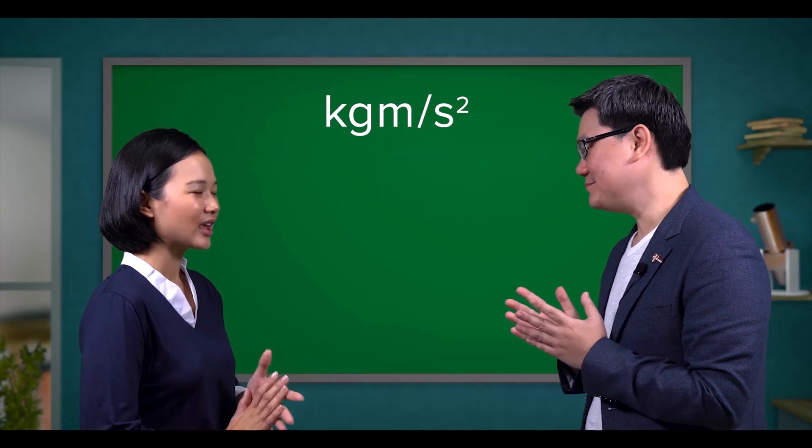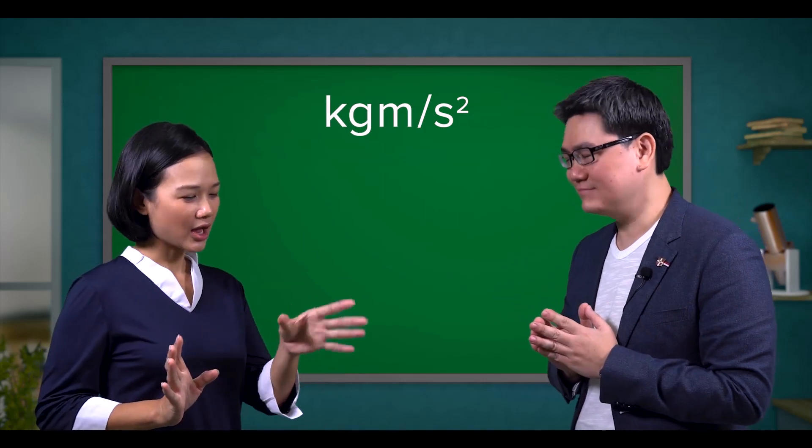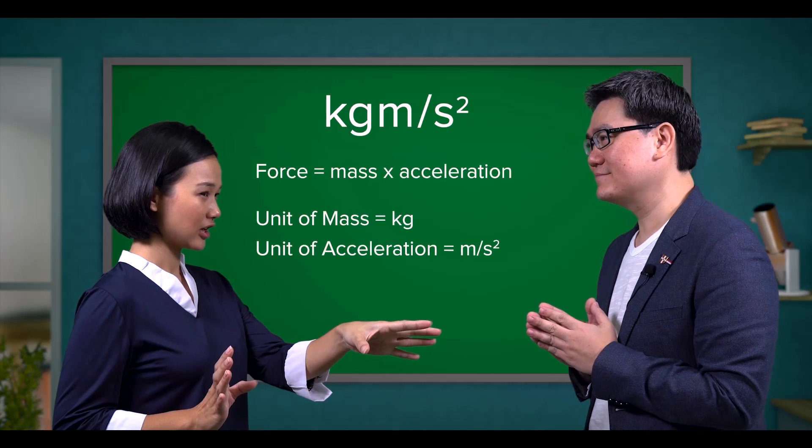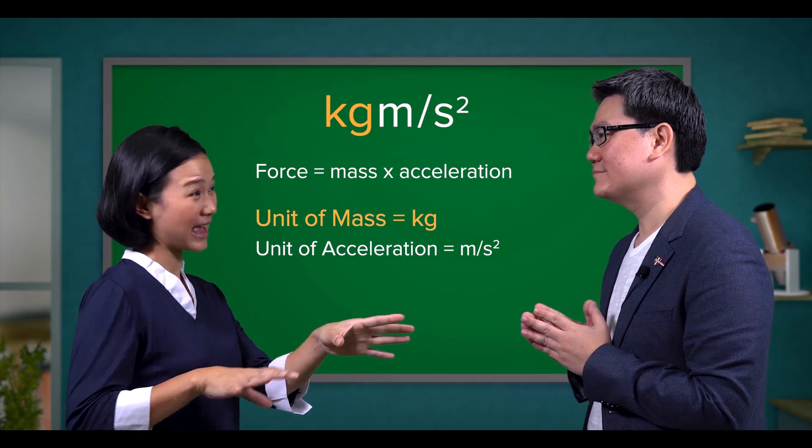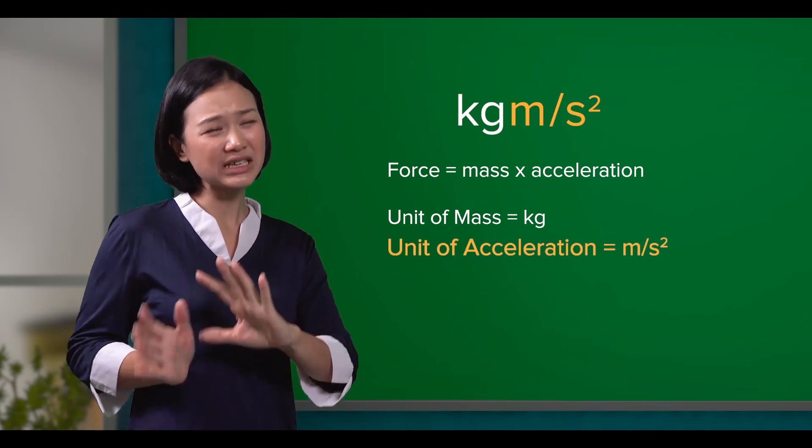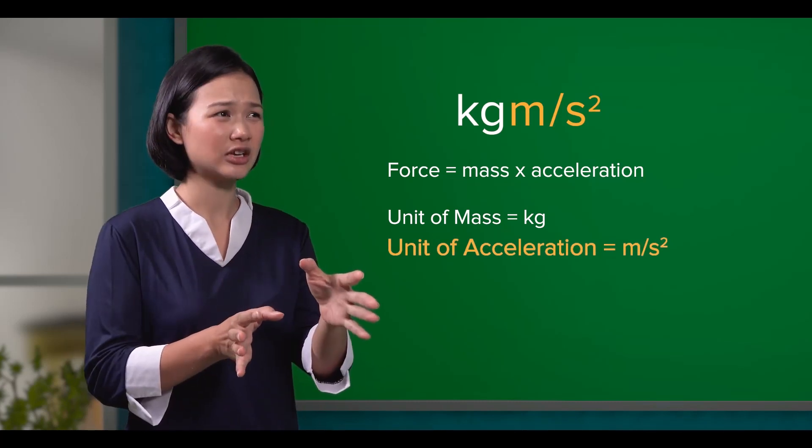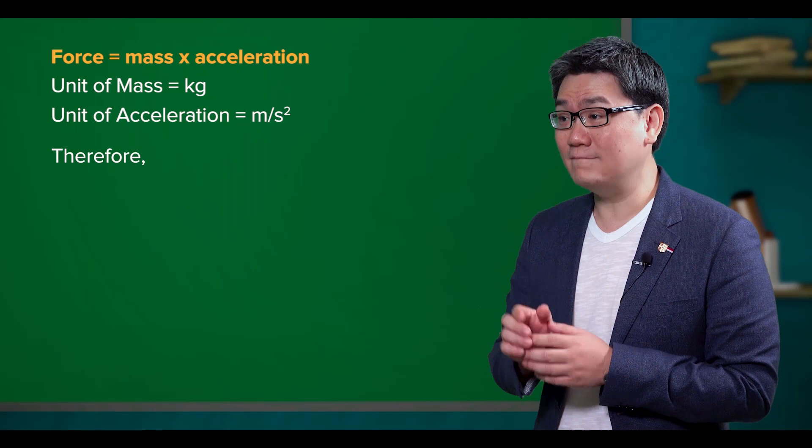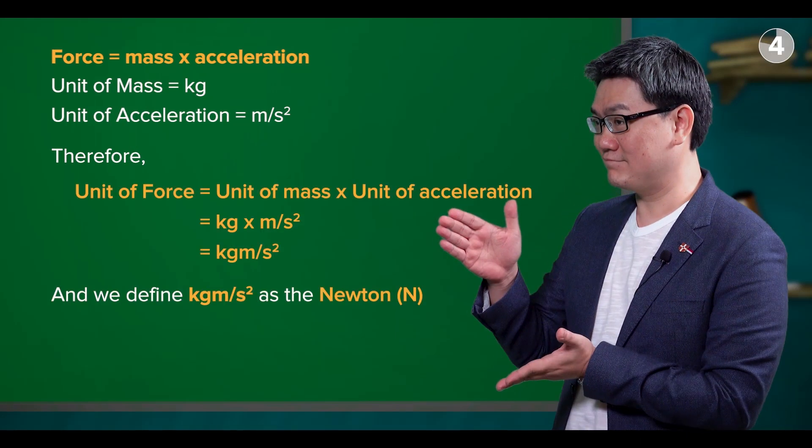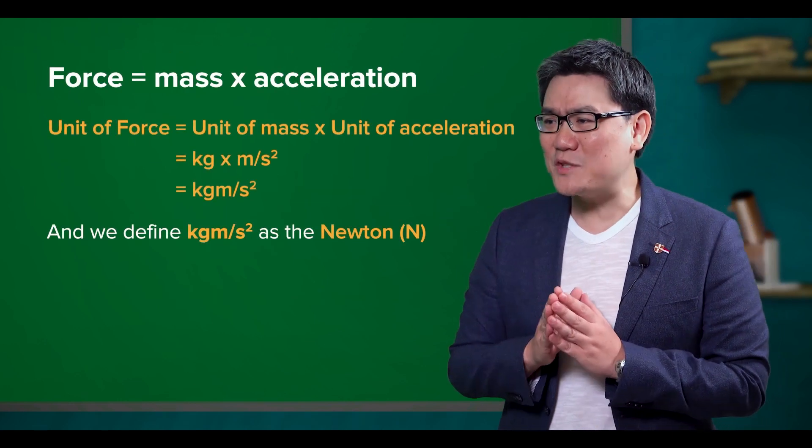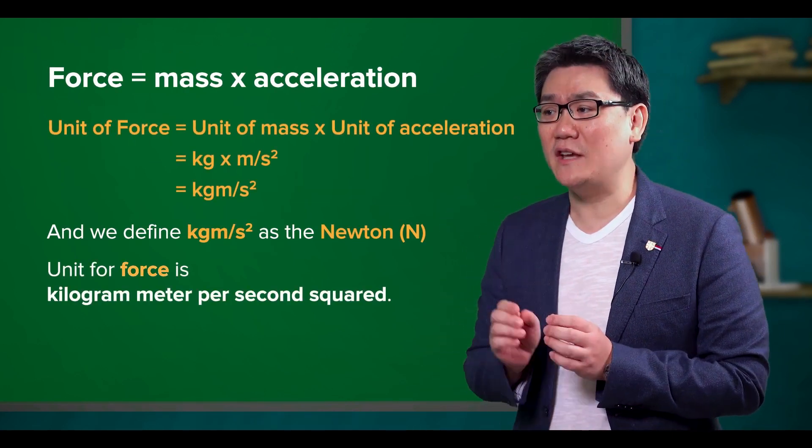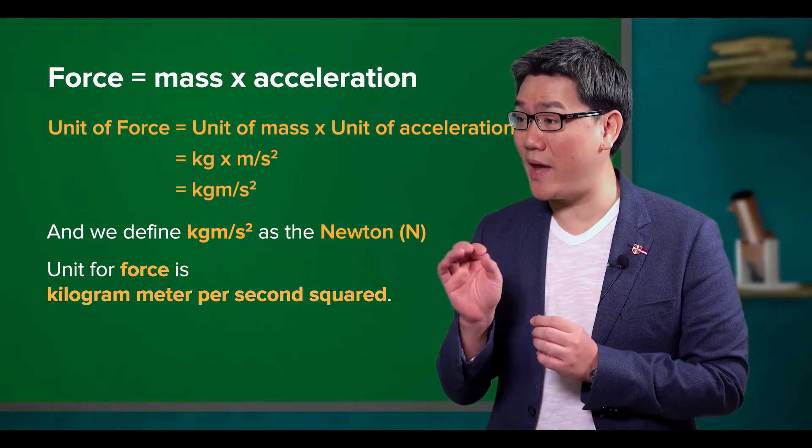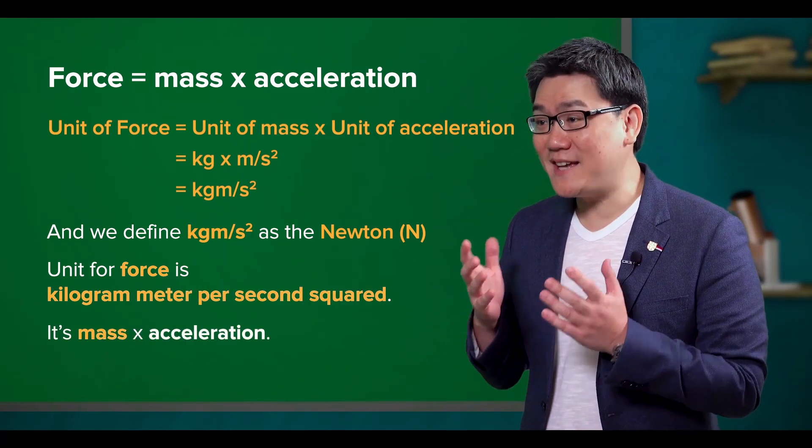Hang on. Kilogram meter per second squared. The kilogram is from the mass part, right? Yes. And the meter per second squared is from the acceleration, correct? Yes. Therefore, that is why the unit for force is kilogram meter per second squared, because it's mass times acceleration.